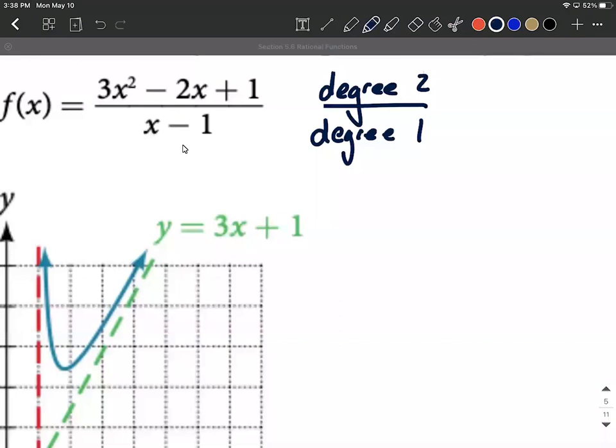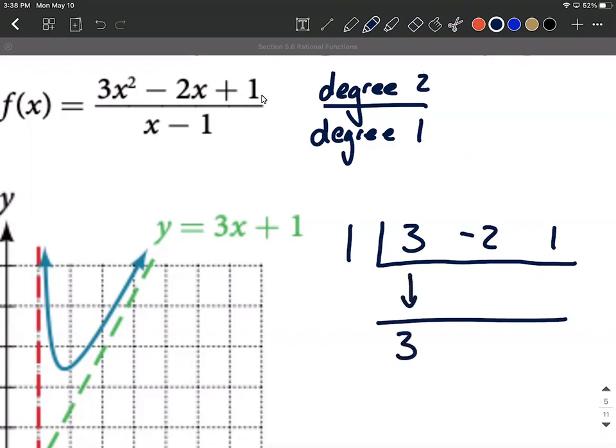So let's set up synthetic division we'll put a one out in front because we're dividing by x minus one and then our coefficients for the three negative two and one are going to go up above. And then our three comes down and remember we multiply one times three makes three and then add vertically. Negative two plus three makes one then we multiply one times one makes one add vertically and we're going to get a two.